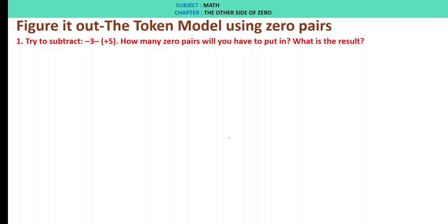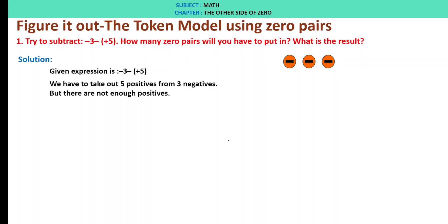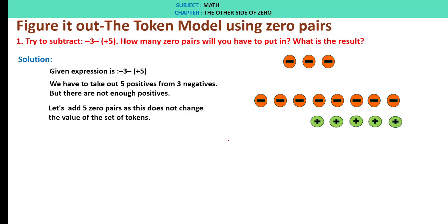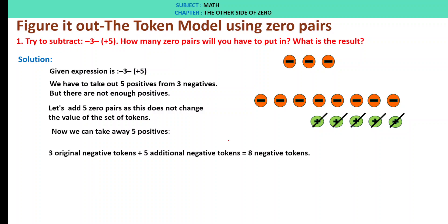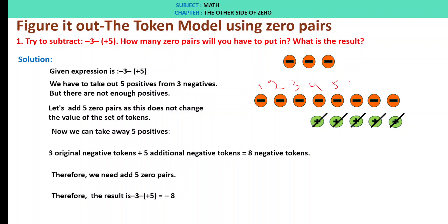Figure it out: the token model using zero pairs. Try to subtract minus 3 minus of plus 5. Minus 3 tokens are there; we have to take out 5 positives from 3 negatives, but there are not enough positives. So let us add 5 zero pairs — that is, 5 negatives and 5 positives. Now we take away 5 positive tokens. The 3 original negative tokens plus 5 additional negative tokens equals 8 negative tokens. Therefore, we need to add 5 zero pairs, and the result is minus 3 minus of plus 5 is minus 8.